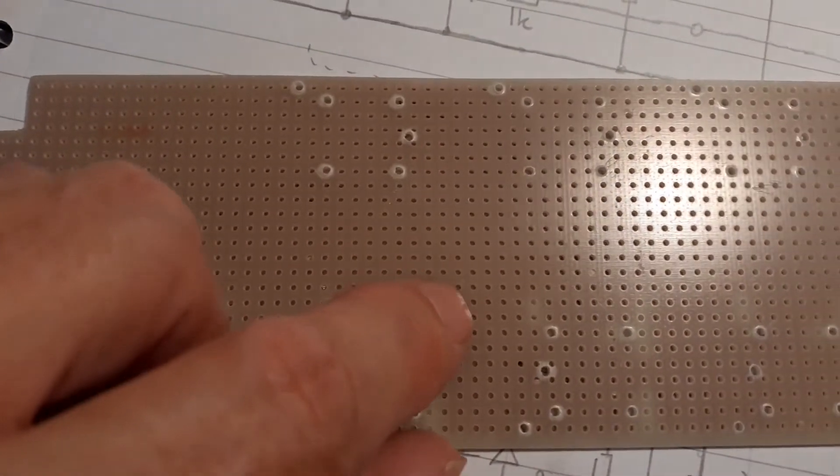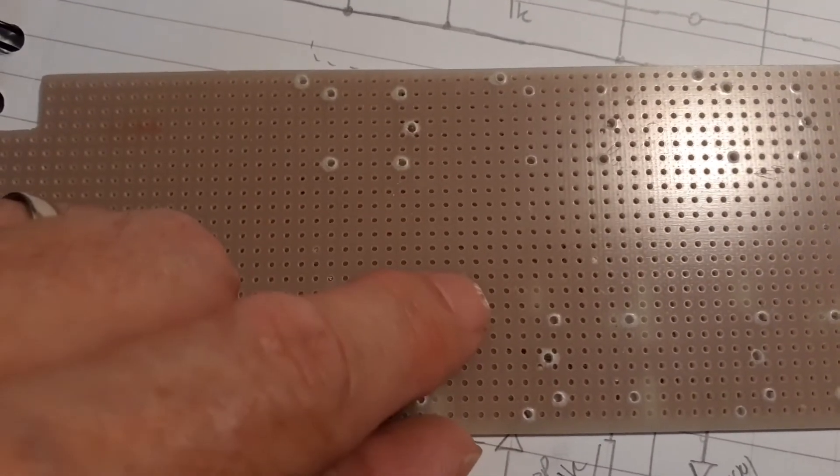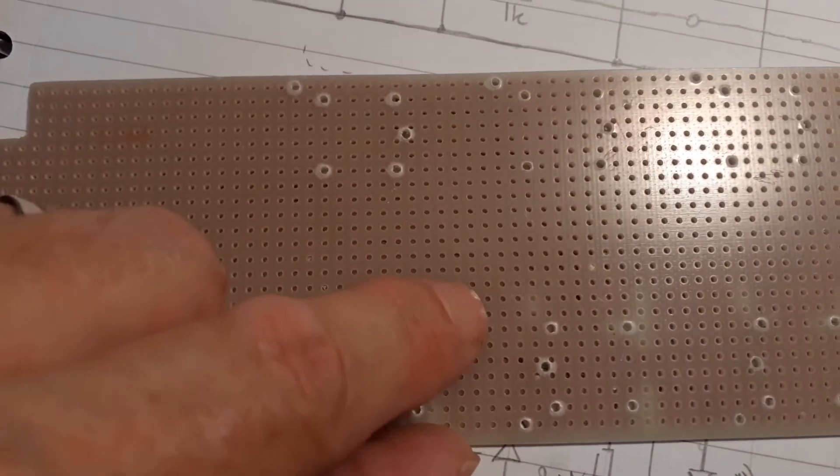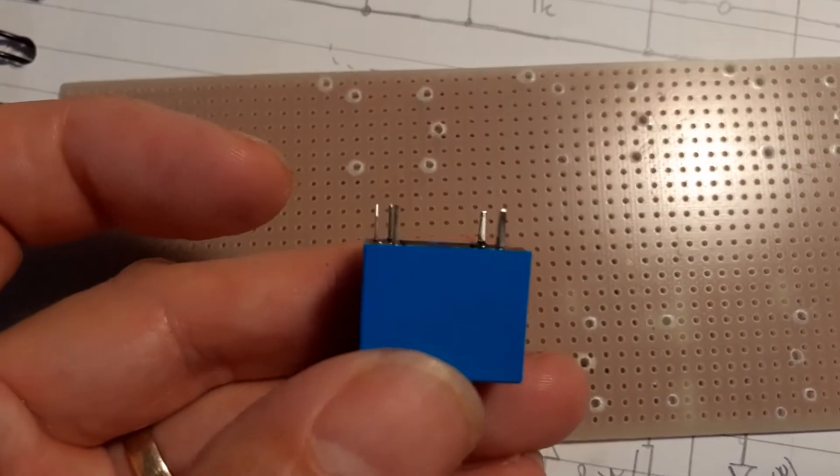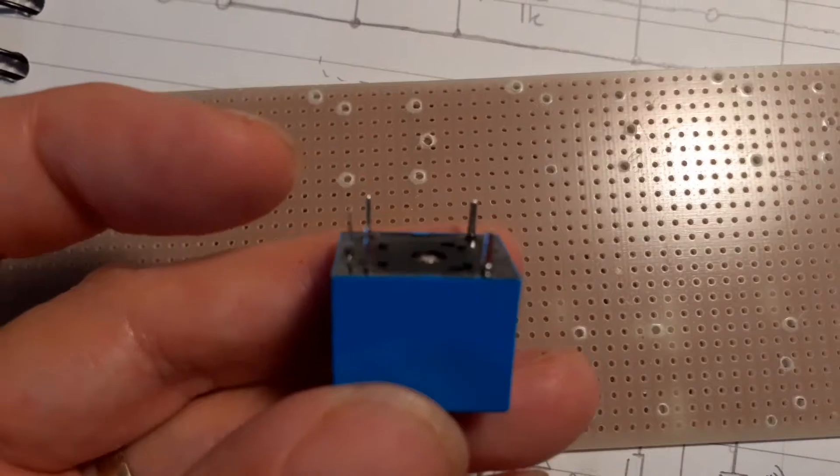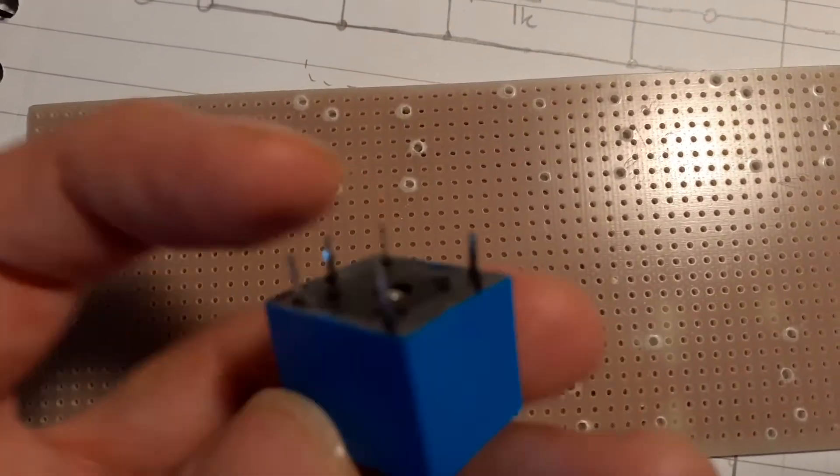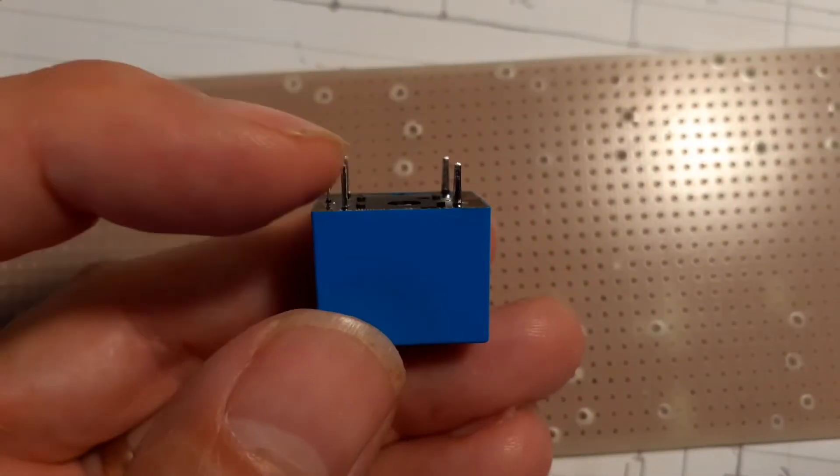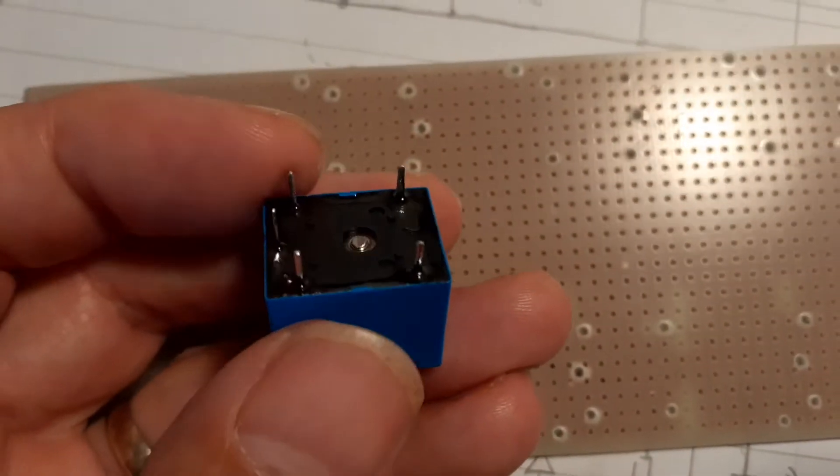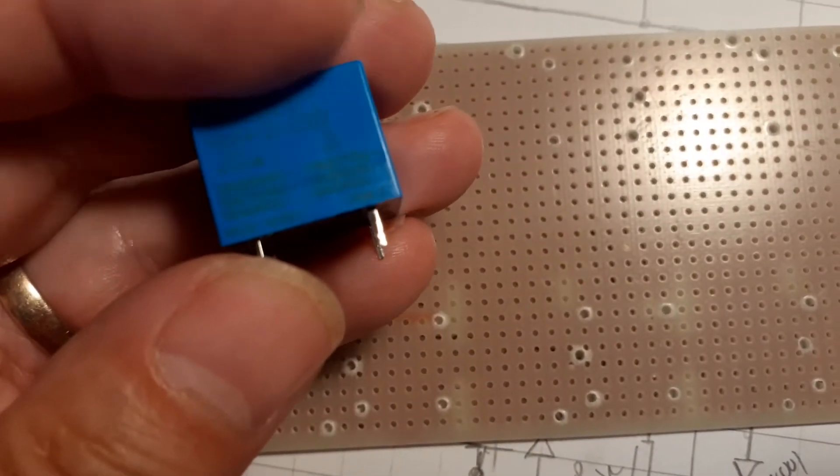Now, the holes in this type of board are on a 0.1-inch matrix, so 2.54 millimeters. Normally, when you buy components, they tend to be on the same kind of layout, but these turn out to be something like 12 millimeters between the pins instead of 12.4 or something like that.